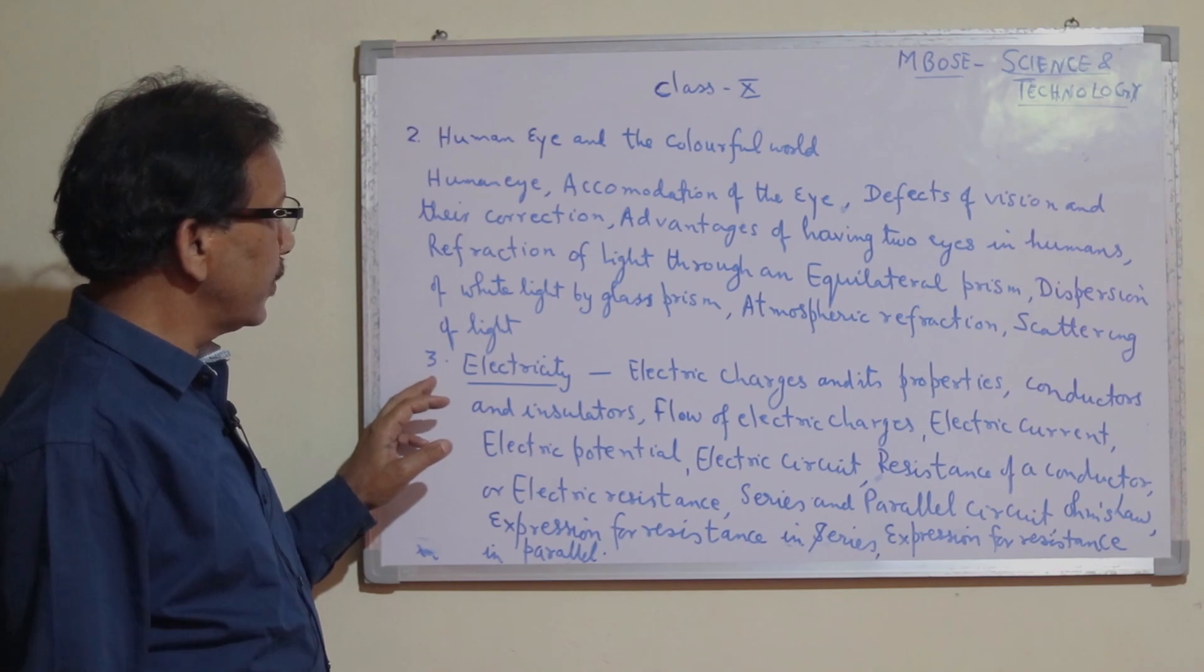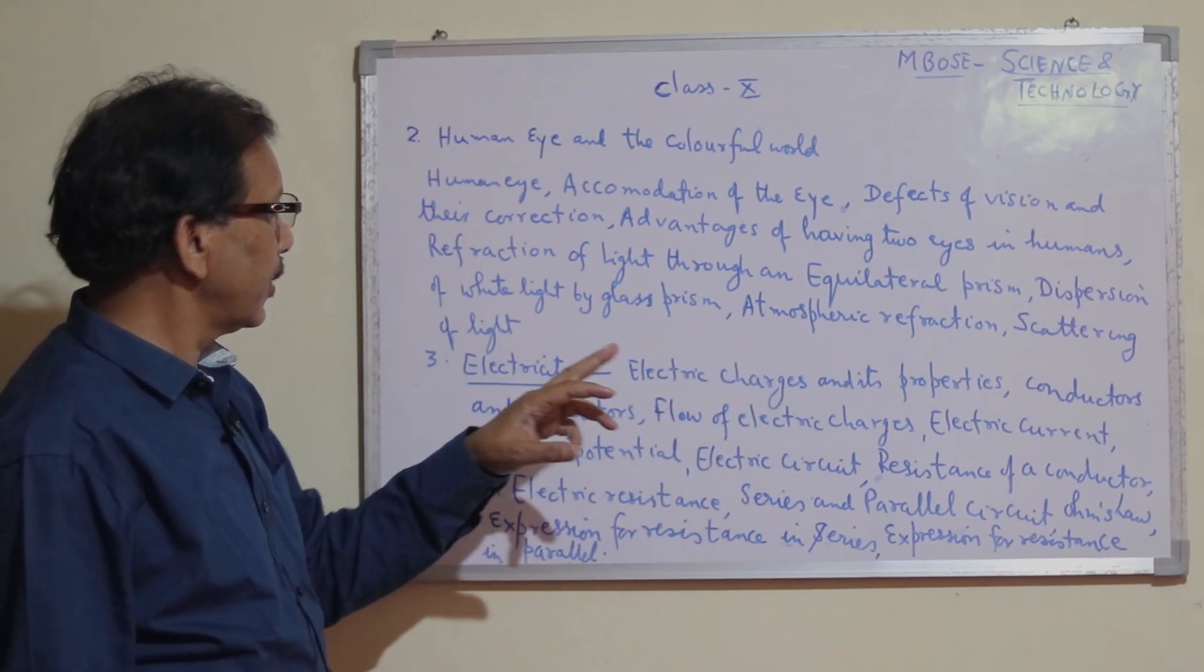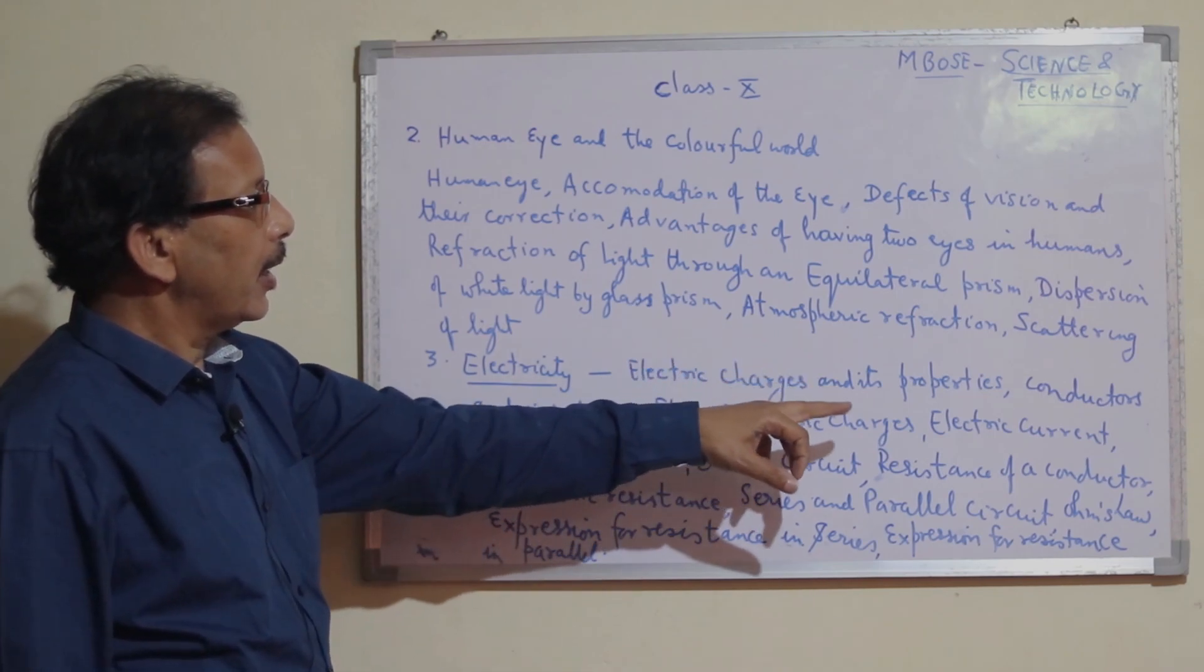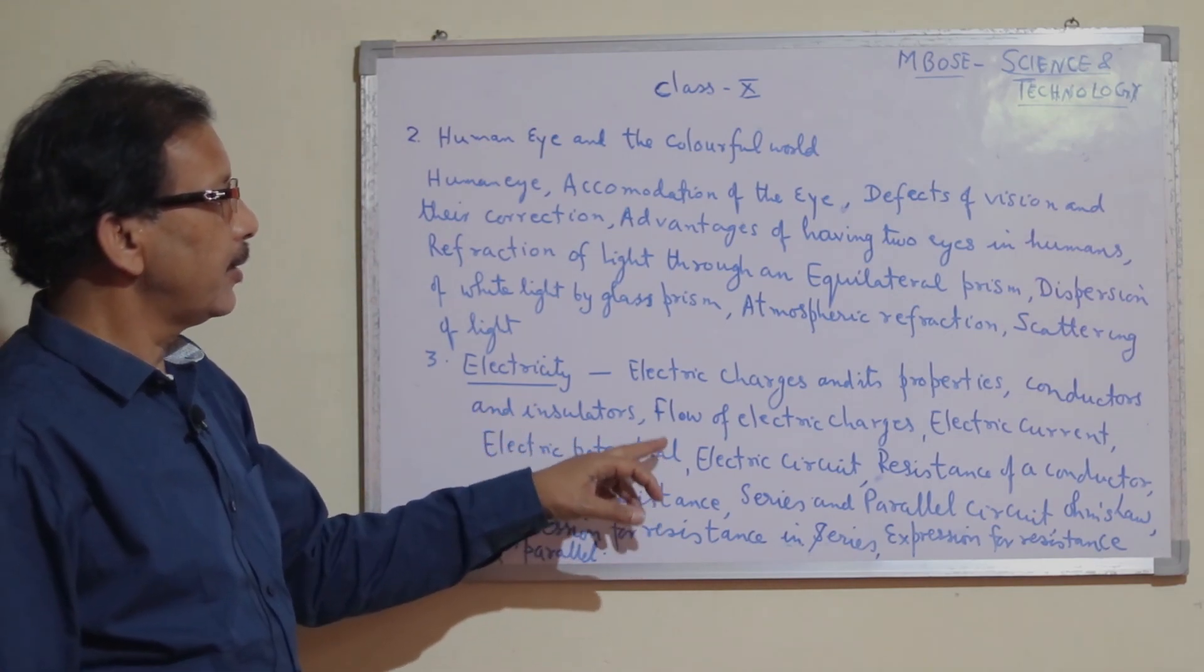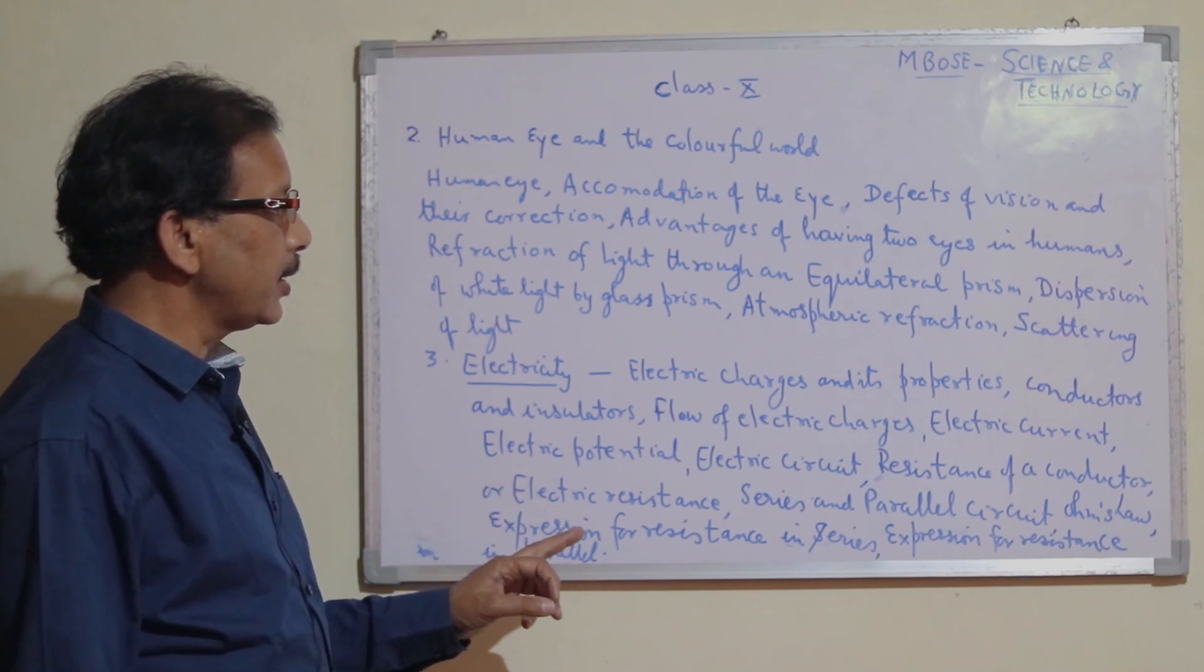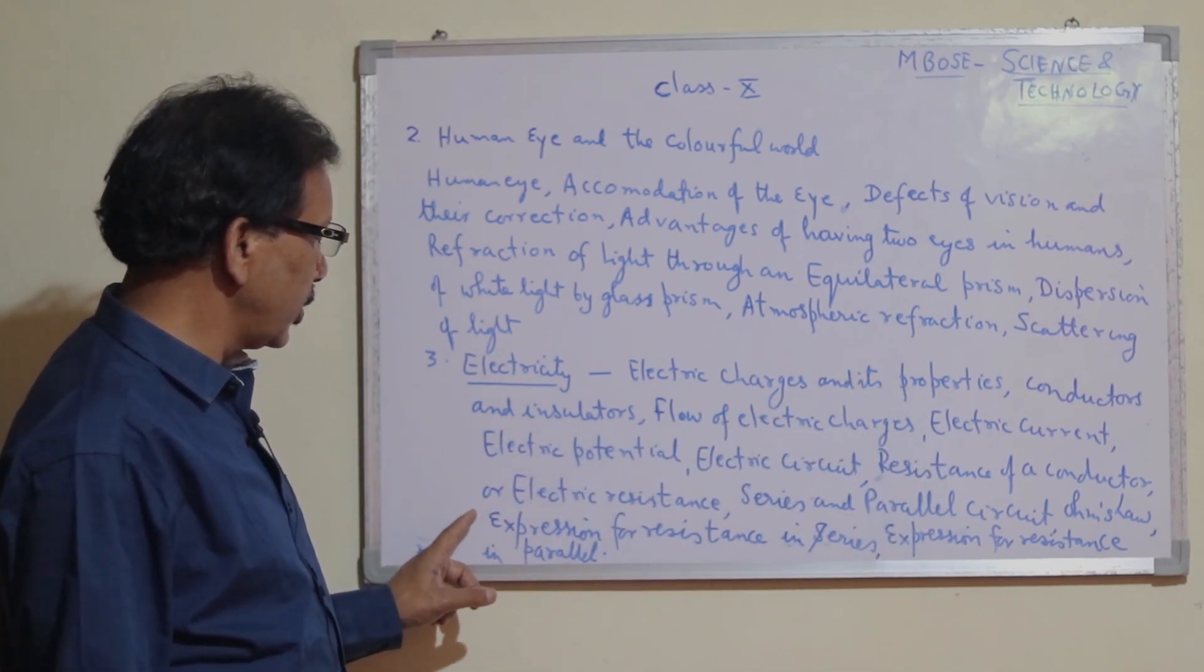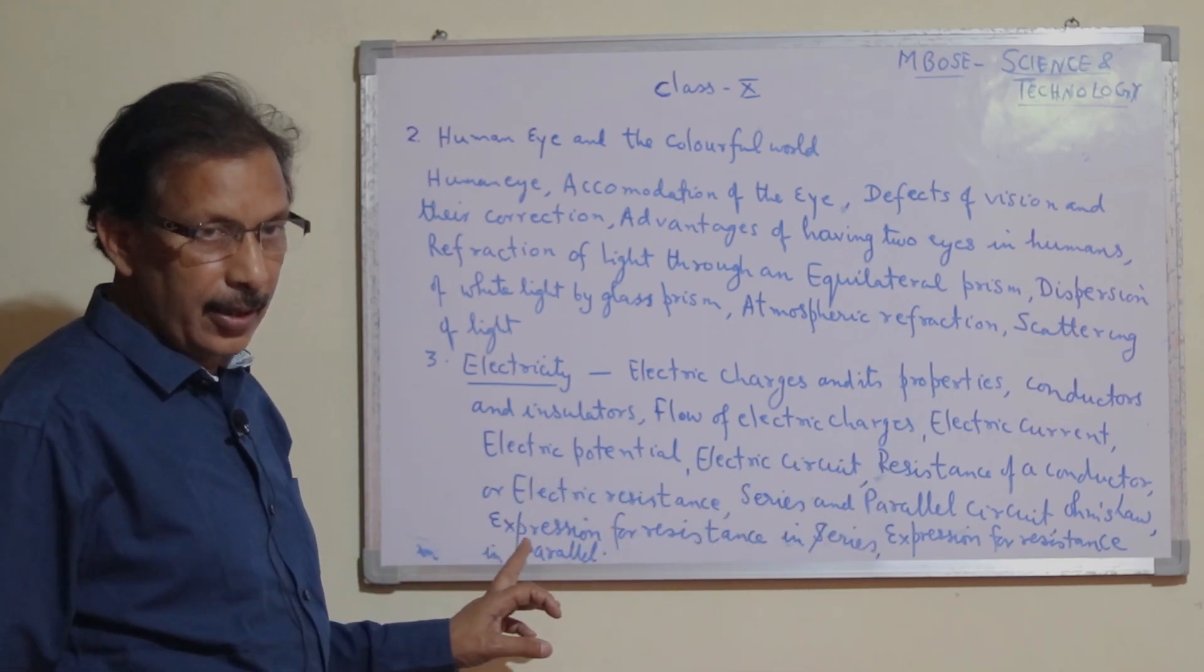Under Electricity chapter 3, we study electric charges and its properties, conductors and insulators, flow of electric charges, electric current, electric potential, electric circuit, resistance of a conductor, series and parallel circuits, Ohm's law, and expressions for resistance in series and parallel.